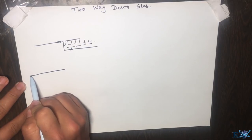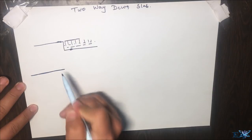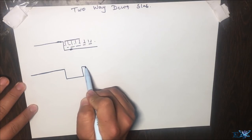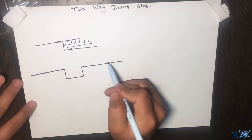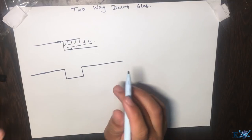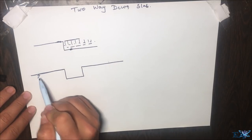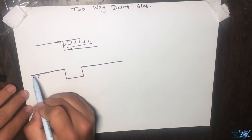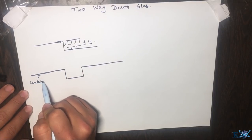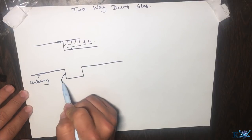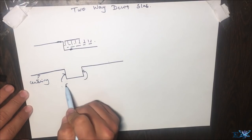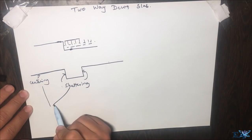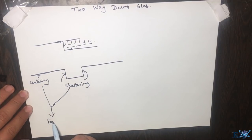If it were a normal slab, the section would look flat across. This is your slab, this is the base of the formwork, and here are your beams on either side. The horizontal portion of the formwork we call centering, and this vertical portion we call shuttering. Together they make the formwork.